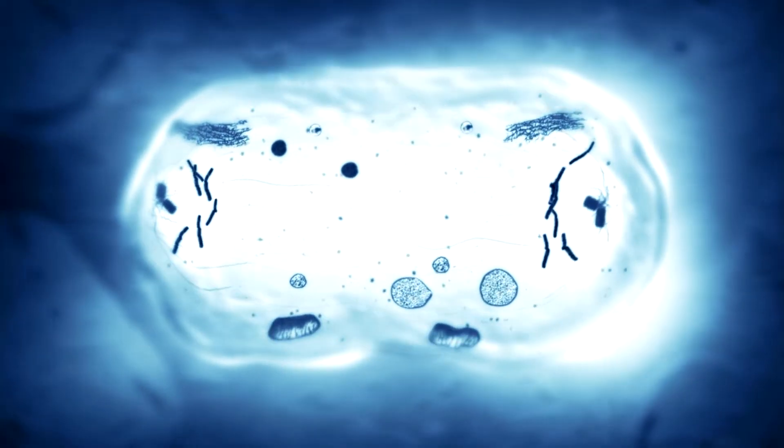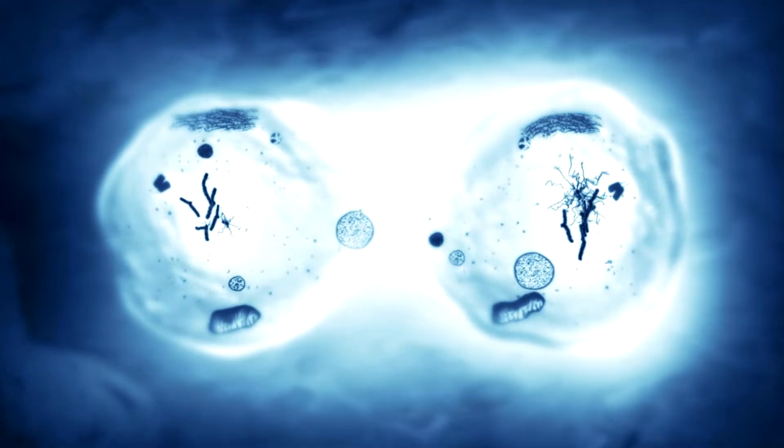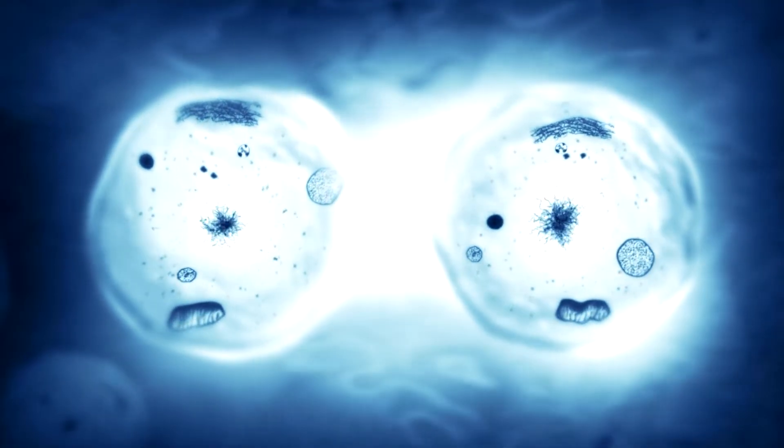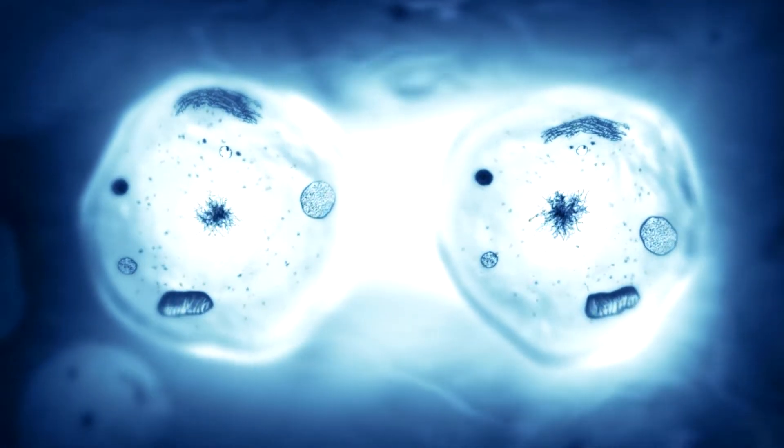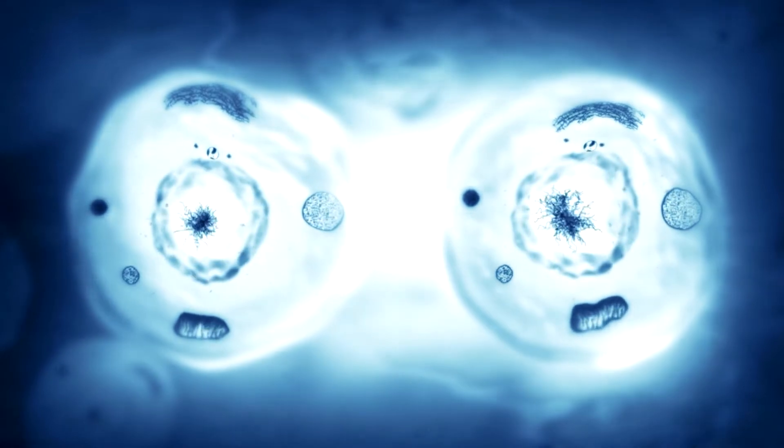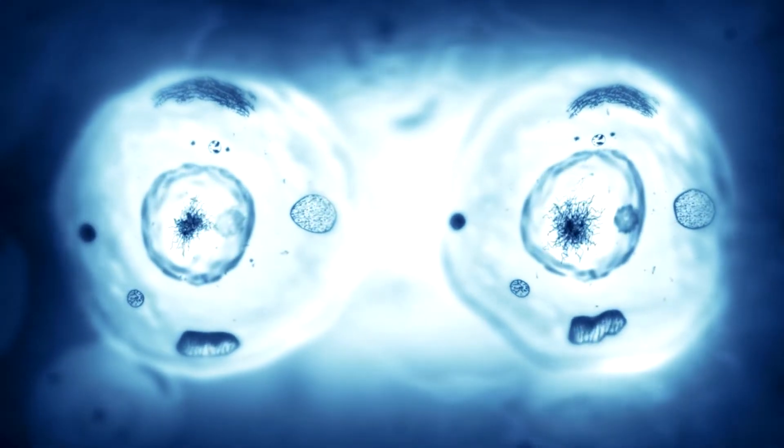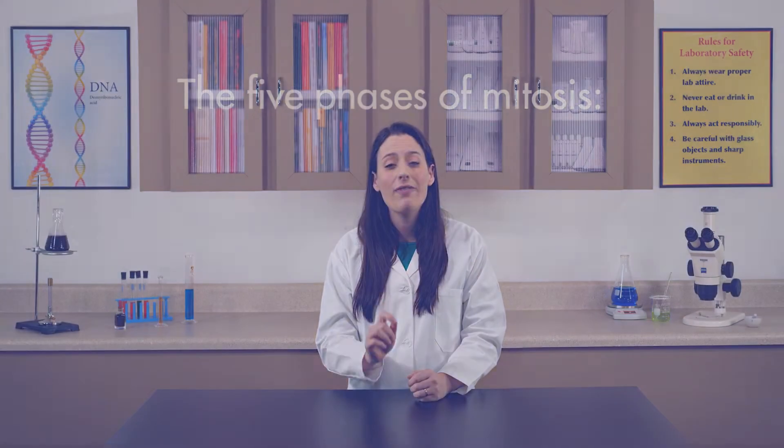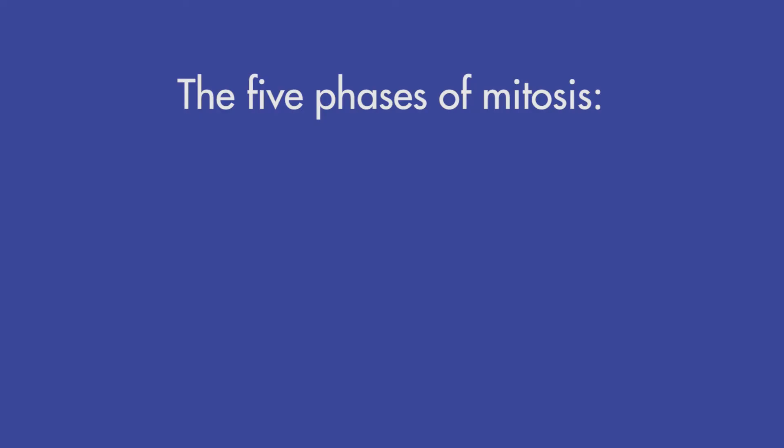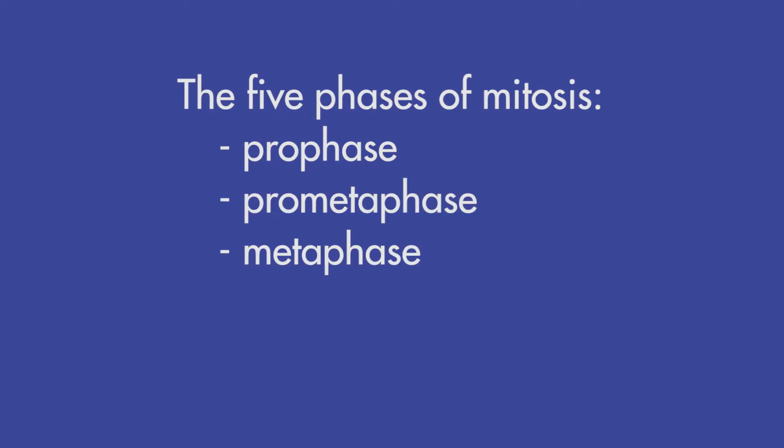During mitosis, a parent cell divides to form two daughter cells. Each daughter cell is a smaller copy of the parent cell with the same number of chromosomes as the parent cell. During mitosis, a cell goes through five phases: prophase, prometaphase, metaphase, anaphase, and telophase.